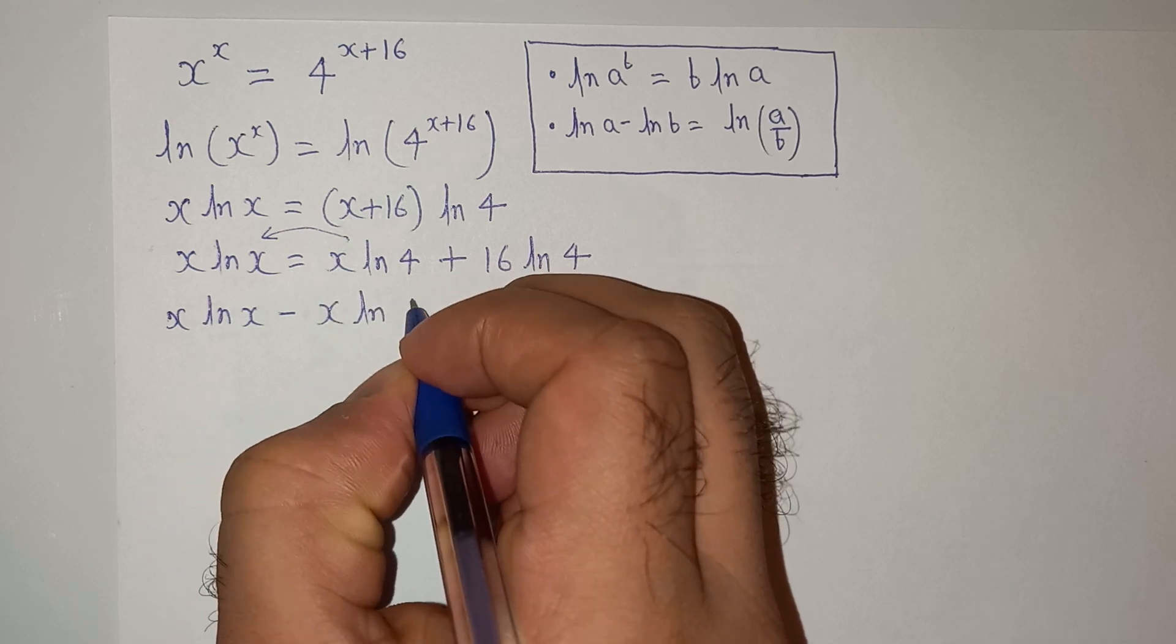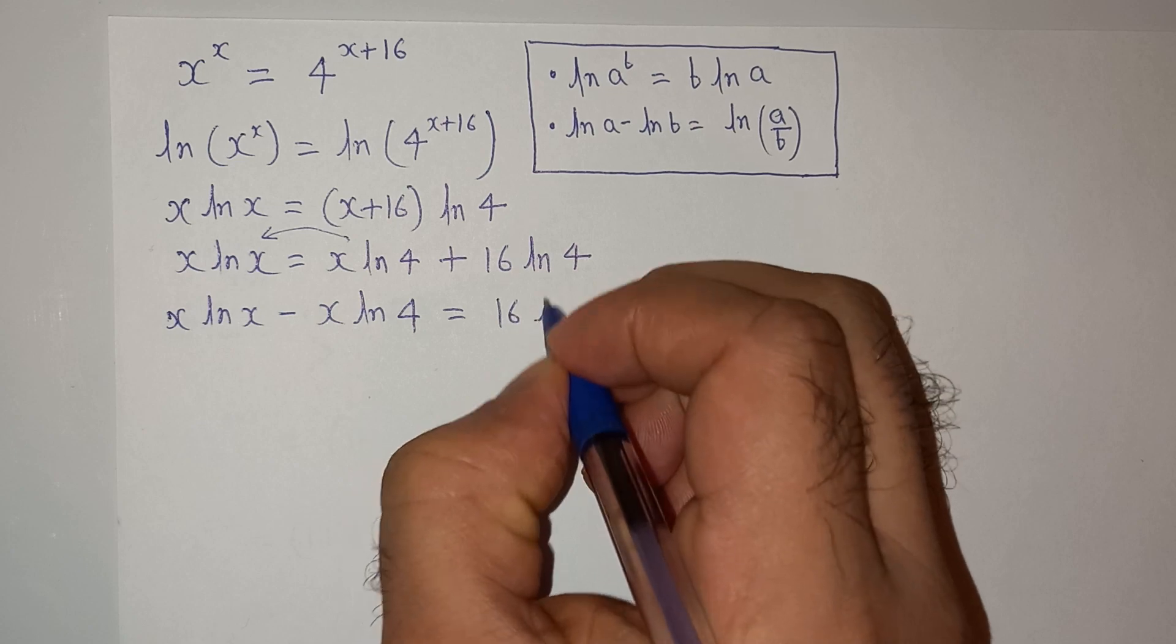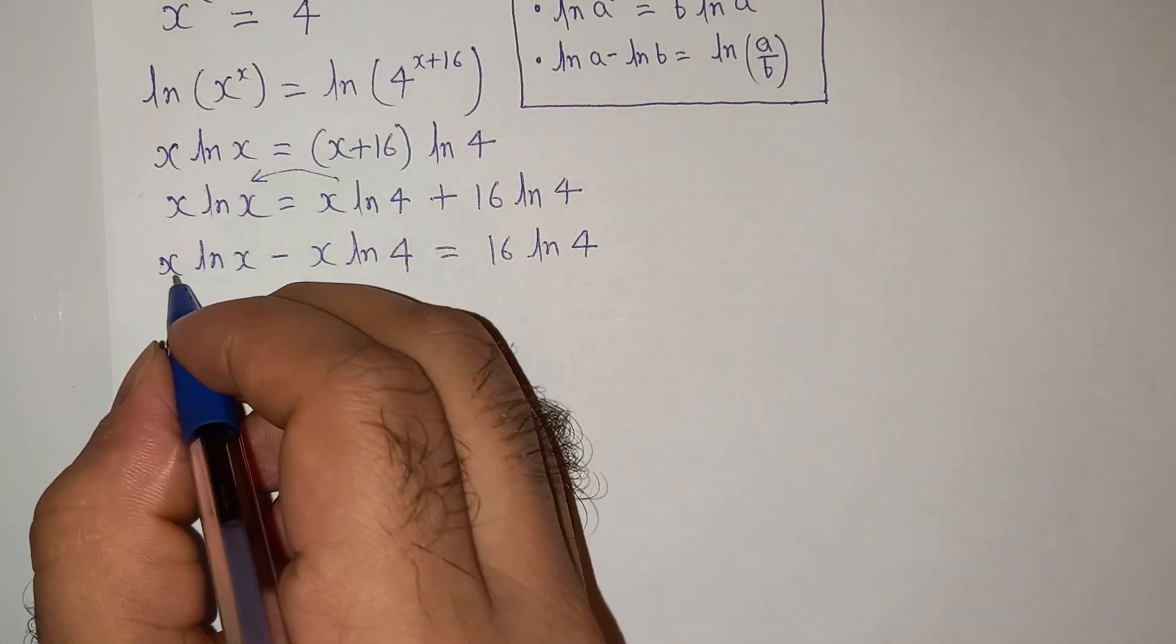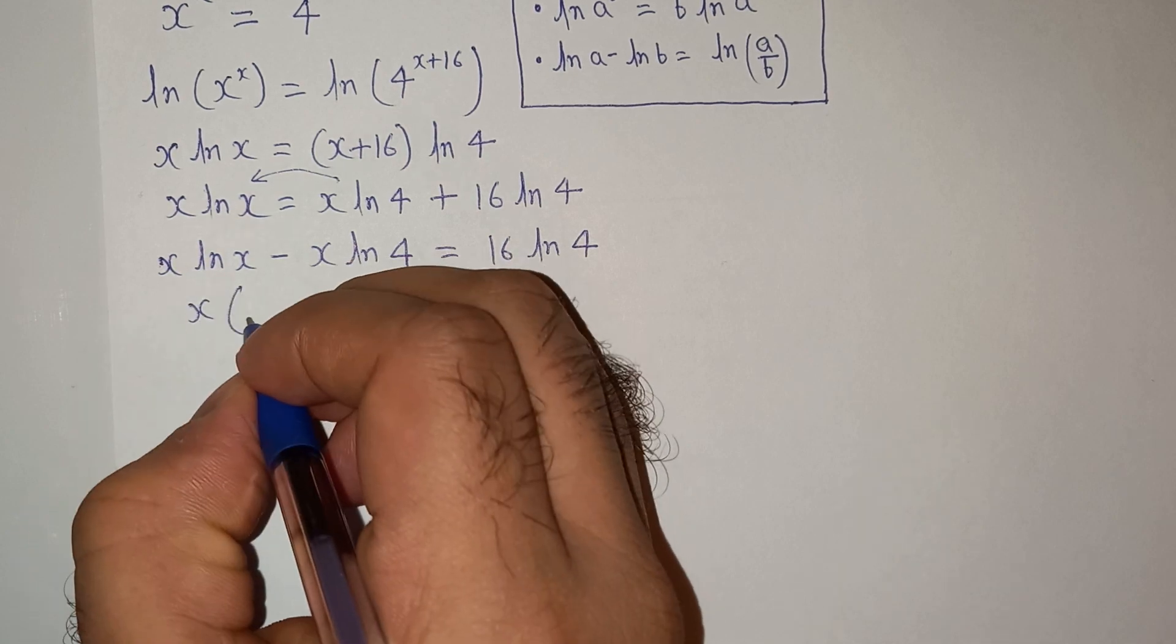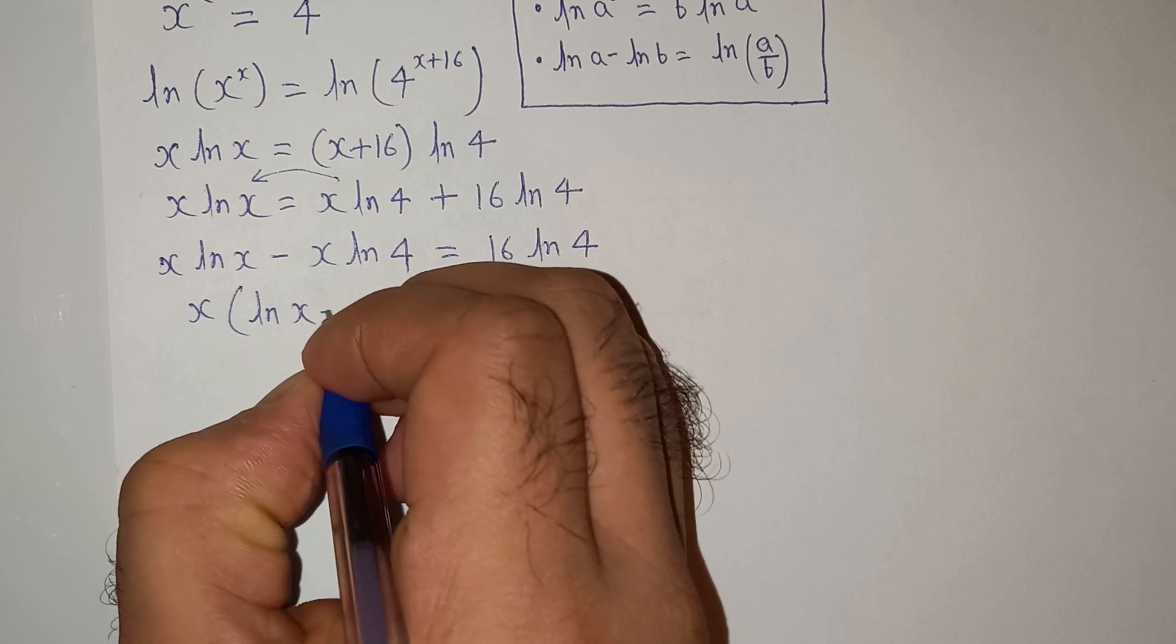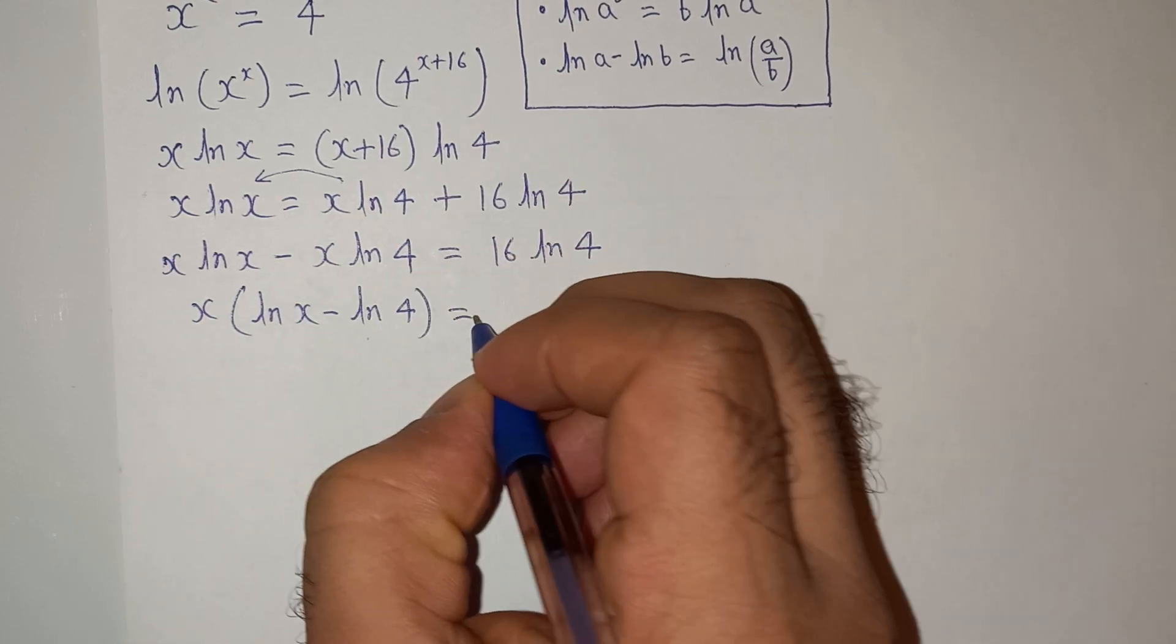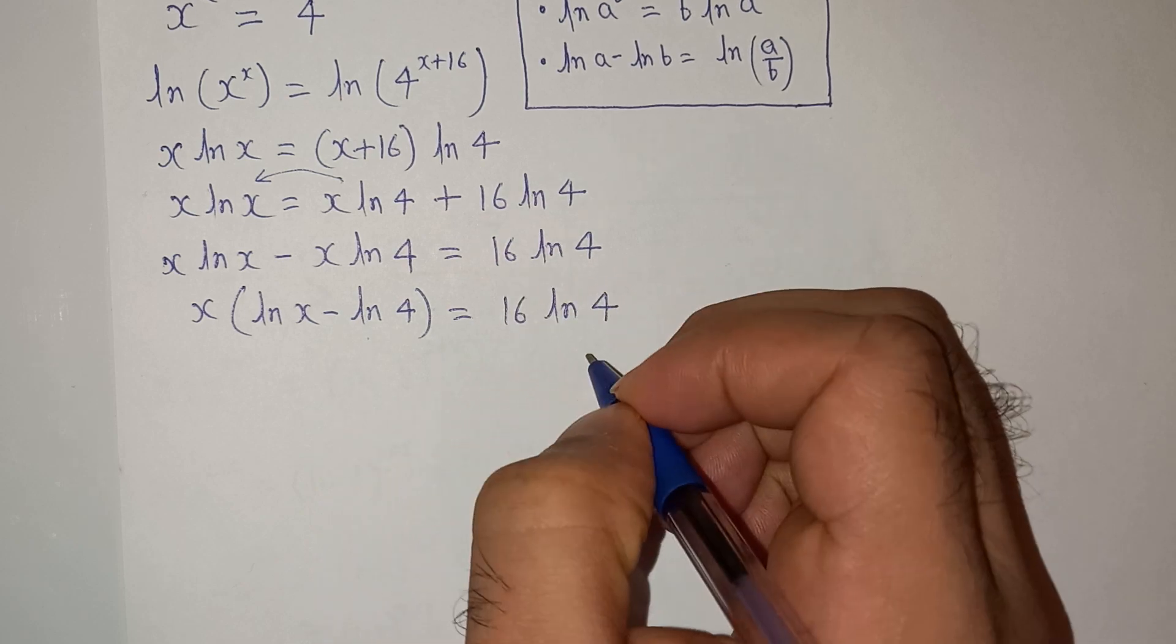Now as we can see that x is common, so we can take it out: x bracket log x minus log 4 bracket closed equals to 16 log 4.